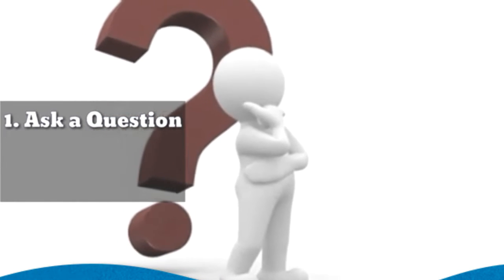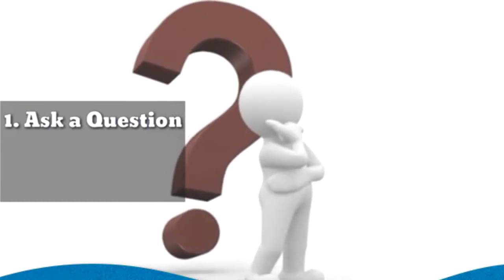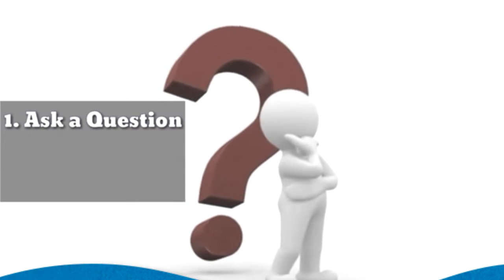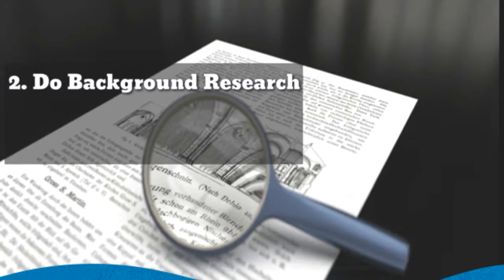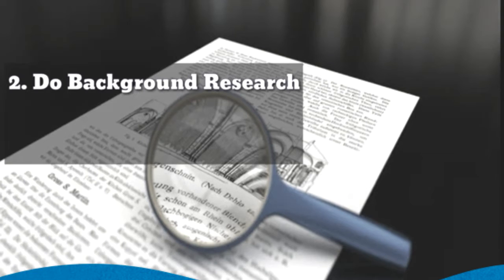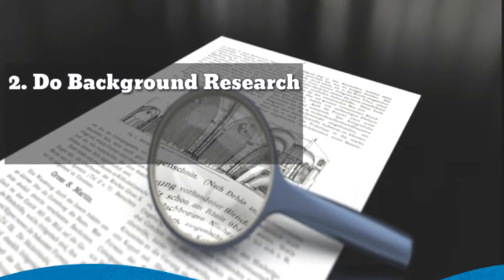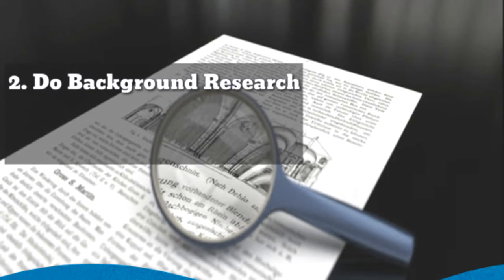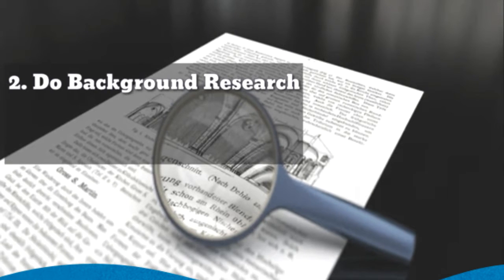Ask a question. The Scientific Method starts when you ask a question about something that you observe — how, what, when, who, which, why, or where. The second step of the Scientific Method is to do background research. Rather than starting from scratch, you want to be a savvy scientist using library and internet research to help you find the best way to do things and ensure that you don't repeat mistakes from the past.